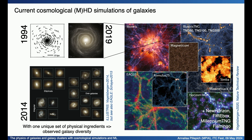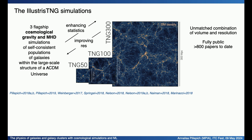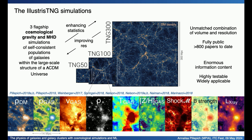Among those, a particularly ambitious program was IllustrisTNG, the next-generation Illustris that I've been working on. The TNG simulations are a series of cosmological, magnetohydrodynamical simulations of self-consistent populations of galaxies in lambda-CDM. The flagship runs are TNG100, TNG50, and TNG300 — the numbers representing the size in co-moving megaparsecs. They remain an unmatched combination of resolution and volume. We made the output fully public, and it has been used in more than 800 papers, because the TNG simulations have enormous information content, making them highly testable and widely applicable.